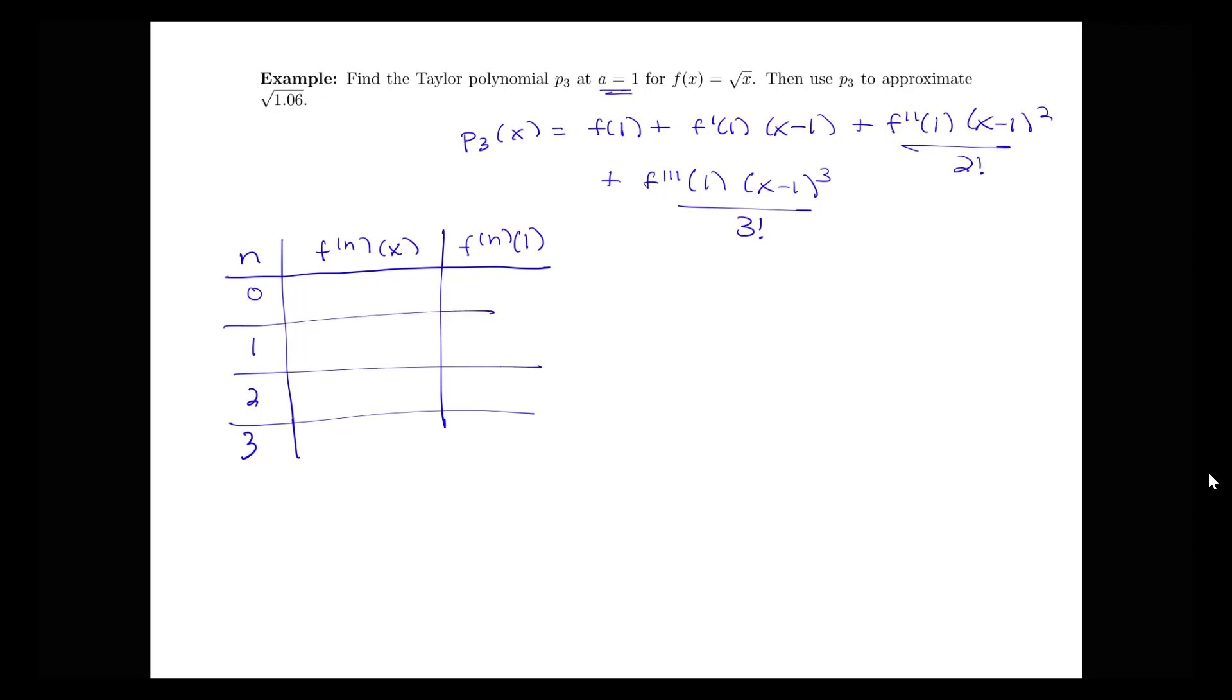The zeroth derivative is our original function. The value of our function at 1 is just 1. The first derivative would be 1/2 x^(-1/2). If I plug 1 into that I'm getting a value of 1/2. My second derivative will be -1/4 x^(-3/2). Evaluate that at 1 and I'm getting -1/4. Then my third derivative will be the derivative of -1/4 x^(-3/2), which will be positive 3/8 times x^(-5/2). Evaluate that at 1 and I'm getting 3/8.